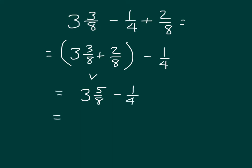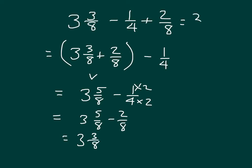We don't have like units here, so we can make like units by multiplying the numerator and denominator by 2. Then we have 3 and 5 eighths minus 2 eighths, which equals 3 and 3 eighths. This actually makes sense: if we subtract a fourth — which is 2 eighths — and then add back 2 eighths, we will be back to our original amount.